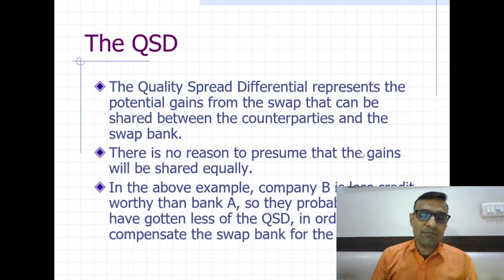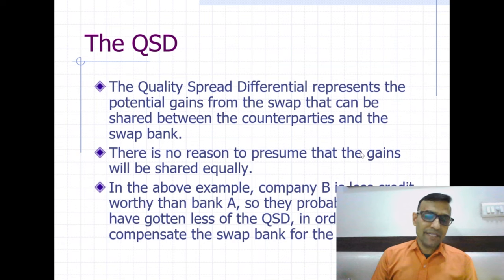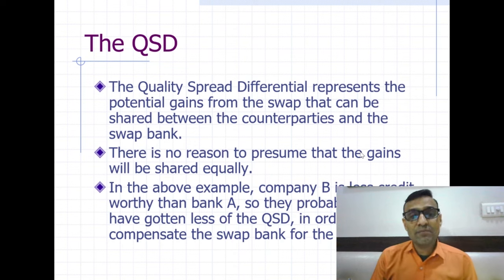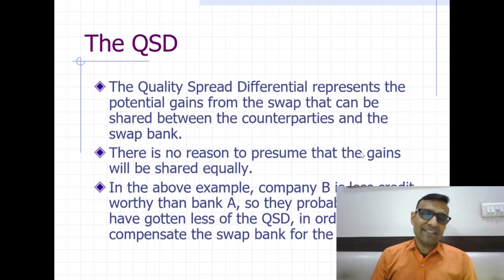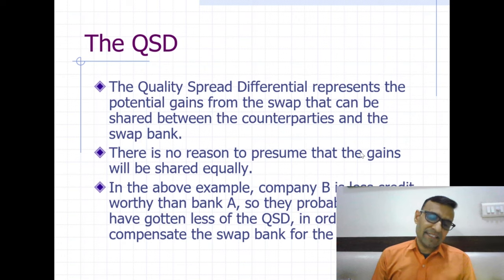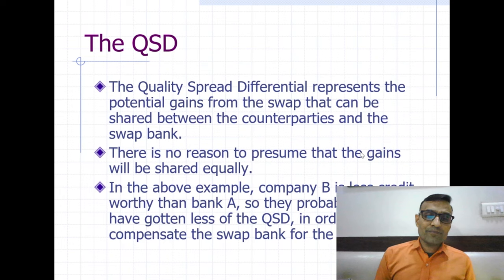This is the win-win-win situation. The QSD represents the potential gains from the swap contract shared between counterparties and the swap bank. Here we assumed equal gain for A and B at 50 basis points each, but there is no reason gains must be shared equally. The bargaining power of the parties — for instance, Bank A being triple-A rated — determines the share of the total gain, as this is an over-the-counter contract.